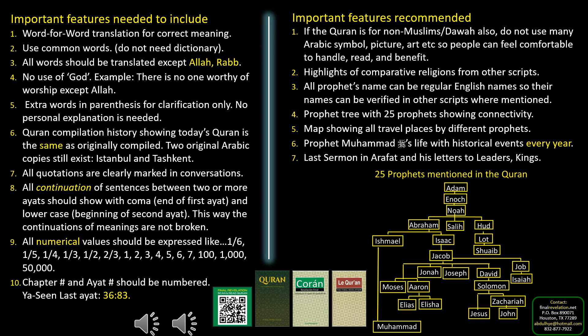These are the recommended features to be added especially if this Quran is used for non-Muslims for Dawah. It should be in simple English with a simple cover, without too much design, so that people can handle it clearly. All highlights of comparative religion should be added. All prophet names should be in English so that people can compare with other holy scriptures. There are 25 prophets Allah mentioned in the Quran, showing the connectivity that should be there.